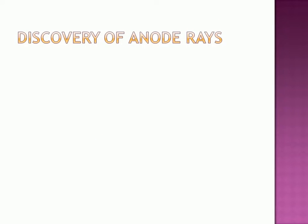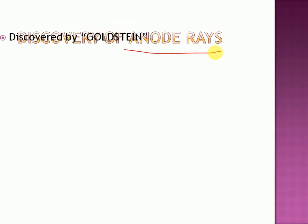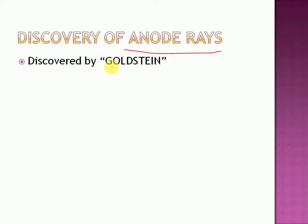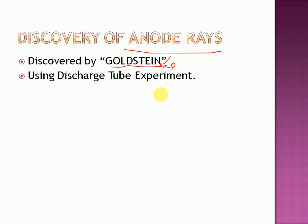When we were talking about discovery of electrons, we first talked about discovery of cathode rays. In the same way, today also, before talking about the discovery of protons, we are going to talk about discovery of anode rays. And these anode rays were discovered by Goldstein — he was the same person who discovered proton also, using these anode rays only. He discovered protons as well as anode rays. He also performed the discharge tube experiment for discovering anode rays as well as protons.